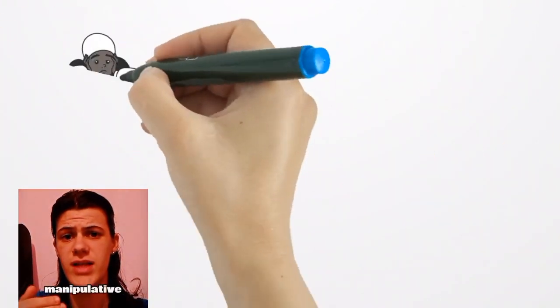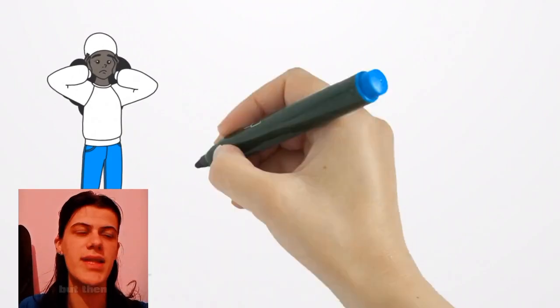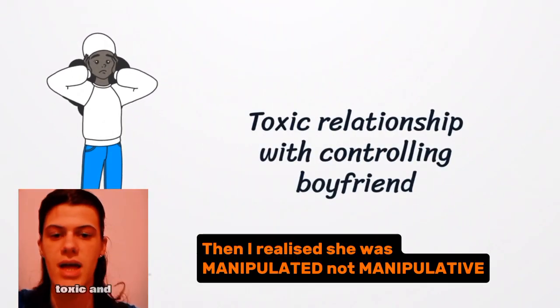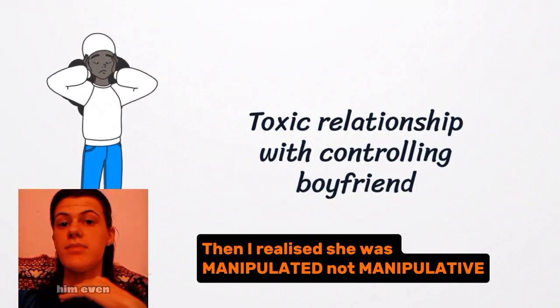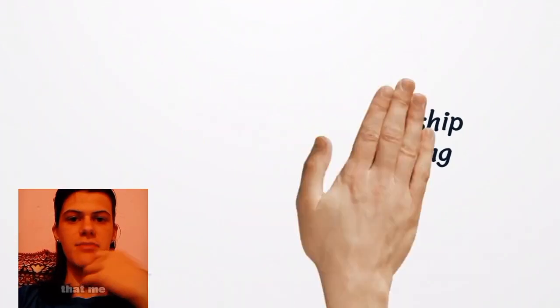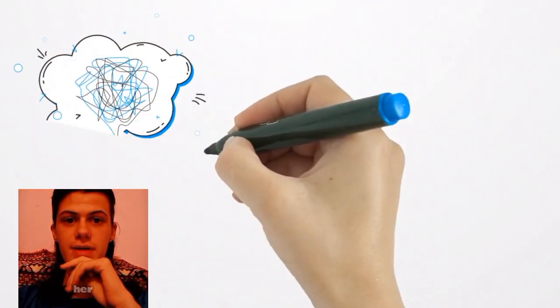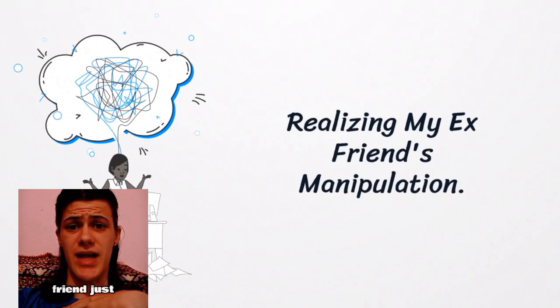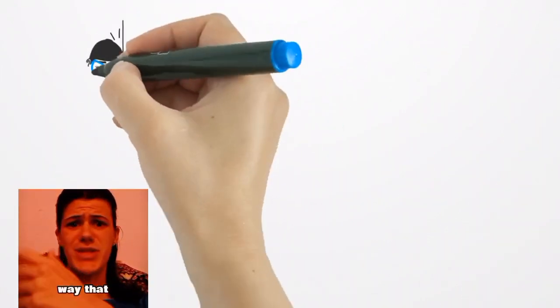But then she entered a relationship with a very jealous, toxic, and controlling guy, and she didn't leave him even after all the advice that me and other classmates gave her. I realized that maybe she was manipulated by my ex-friend just like me, in the same way that she's manipulated now by her toxic boyfriend.